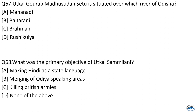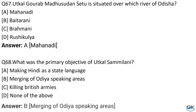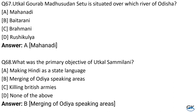Question No. 67: Udkala Gaurabha Madhusudan statue is situated over which river of Odisha? Option A: Mahanadi. Option B: Vaitarani. Option C: Brahmani. Option D: Rushikulya. The answer is Option A, Mahanadi. Question No. 68: What was the primary objective of Utkala Sammilani? Option A: Making Hindi a state language. Option B: Merging of Odisha speaking areas. Option C: Killing British armies. Option D: None of the above. The answer is Option B, merging of Odisha speaking areas.